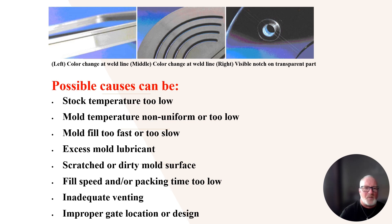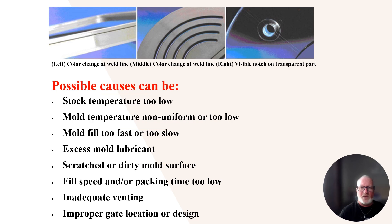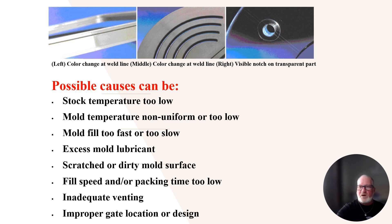Here are a couple of pictures to show you a couple of different examples. You can see the discoloration where the part comes together. The left picture shows color change at the weld line, the middle picture shows color change at the weld line, you can see it going across where the ribs are, and then the right one shows a visible weld line right where the boss is — you can see where the material goes around it because of the flow front.